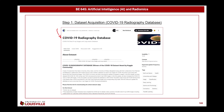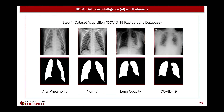The first step is to acquire the dataset, which in our case will be the COVID-19 radiography database, publicly available on the Kaggle platform — a link to the dataset will be provided. This database contains four categories or classes: viral pneumonia, normal, lung opacity, and COVID-19.